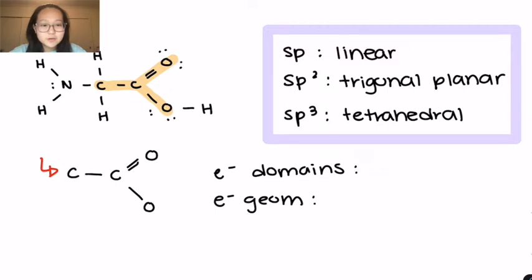I'm not going to be focusing too much on the Lewis structure. I'm just drawing out a general idea so you can see the shape. And now what we want to do again is count our electron domains. We can see that this shape has three electron domains: one with the oxygen, another oxygen, and then the carbon.